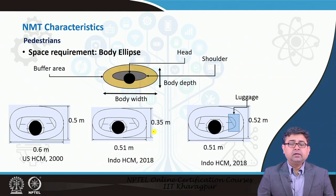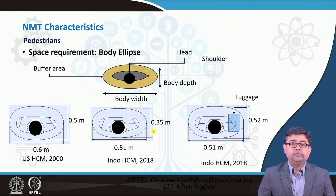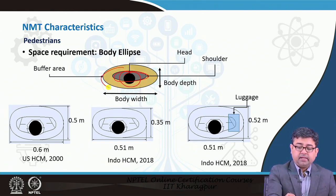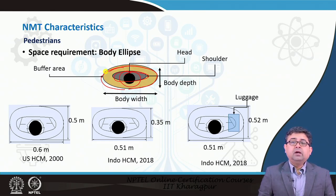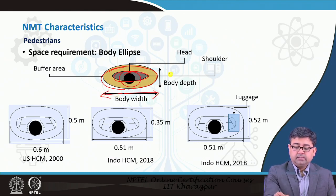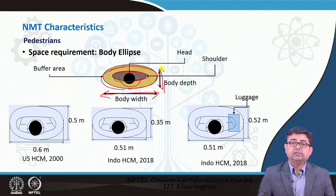When we look at the space requirements for each pedestrian, they are usually determined by the ellipse that our body forms. If you look at our body from the top, you will see the head in a black circle, the shoulders in a gray elliptical shape, as well as the buffer area needed for free movement of your arms. When you walk your arms swing, so there is a free buffer area needed by every person to walk freely. This body width and body depth are the basic dimensions to consider while designing for pedestrians.